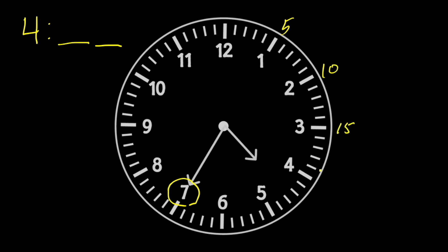Skip counting by five, seven times: five, ten, fifteen, twenty, twenty-five, thirty, thirty-five. Seven fives is thirty-five. Our time is four thirty-five.